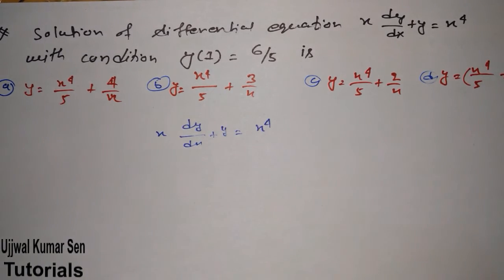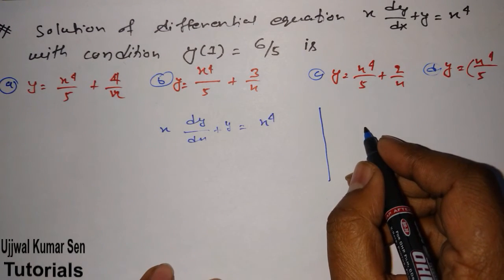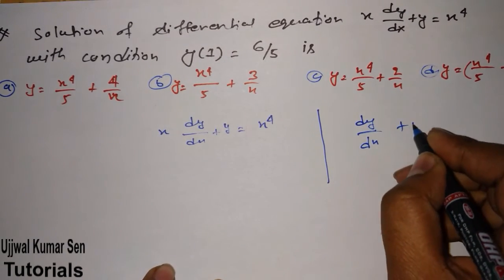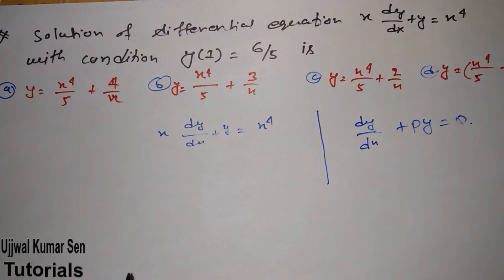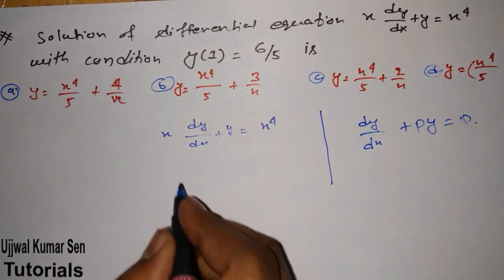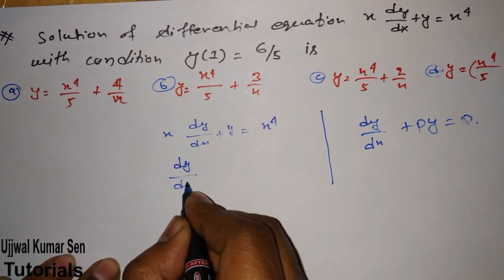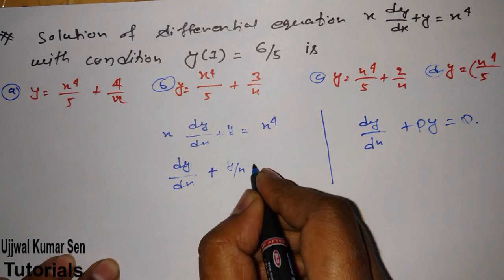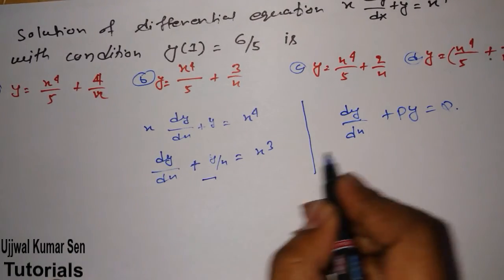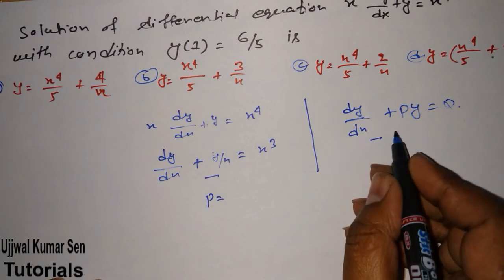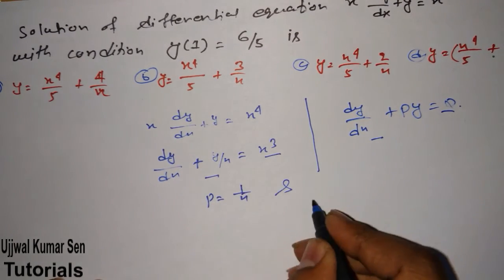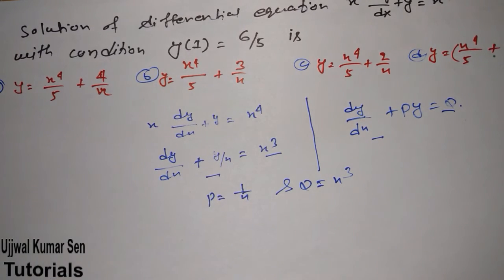As I shared, whatever equation is given, you have to write it in the standard form dy/dx + Py = Q. So divide both sides by x. Then we get: dy/dx + y/x = x cubed. Now compare these two equations: P = 1/x and Q = x cubed.